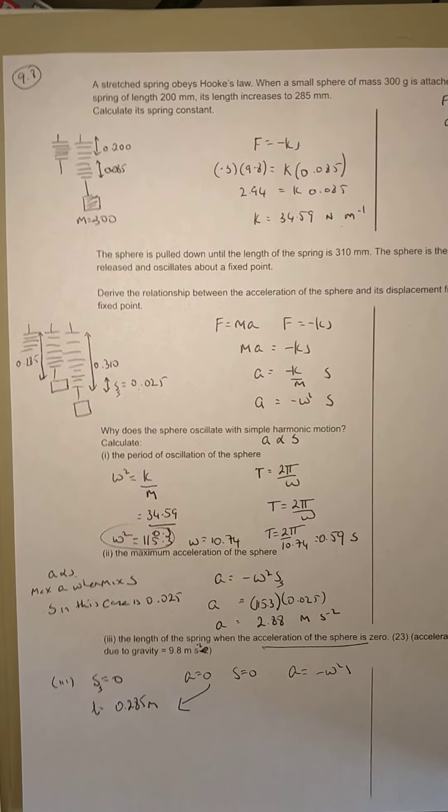s equals zero. So the length of the spring is going to be just 0.285 because the displacement at that time is zero. When a is zero,